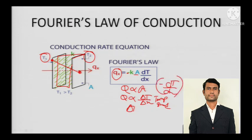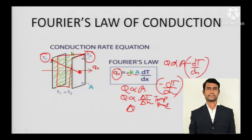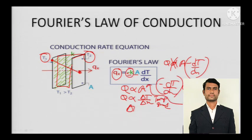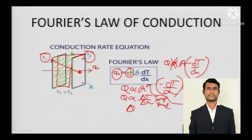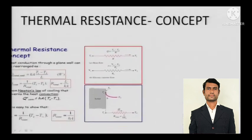When you remove the constant of proportionality, you get the thermal conductivity k. This k is the thermal conductivity of the material. The more free electrons present in a material, the better its thermal conductivity. Insulators have very low thermal conductivity whereas metals have the highest thermal conductivity.